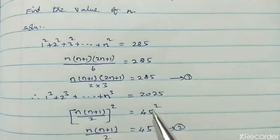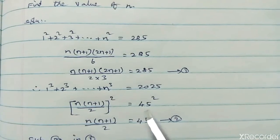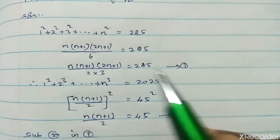45 square cancels. So, n into n plus 1 divided by 2 equal to 45. Substitute 2 in 1.